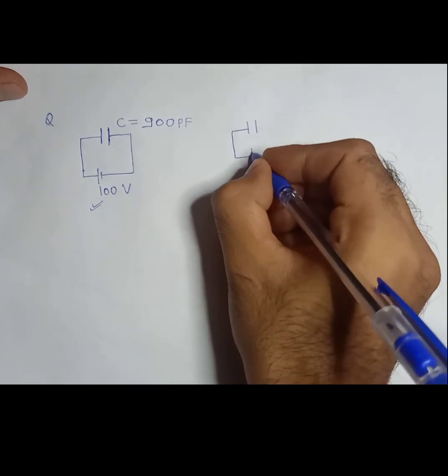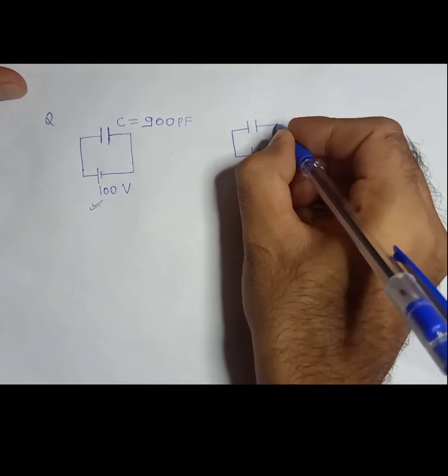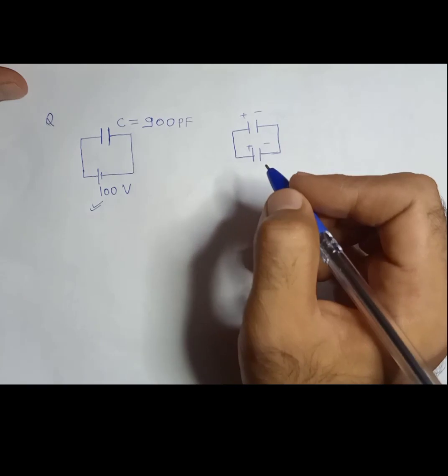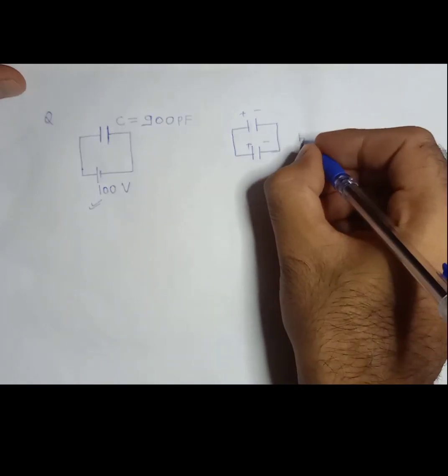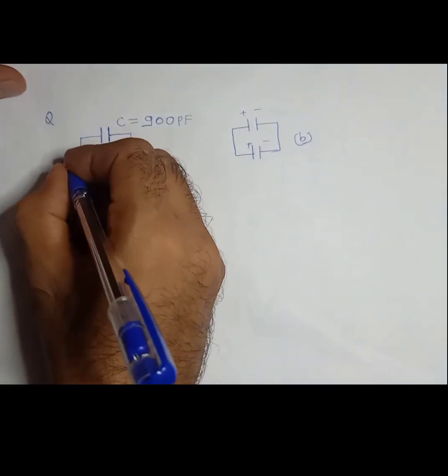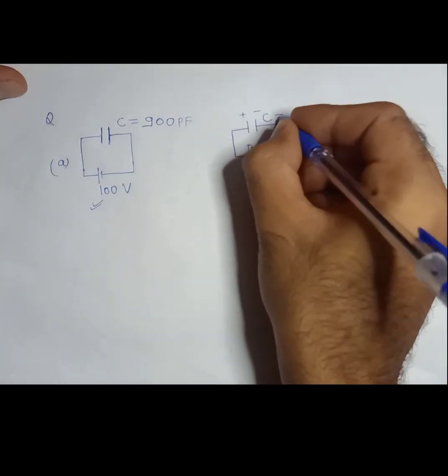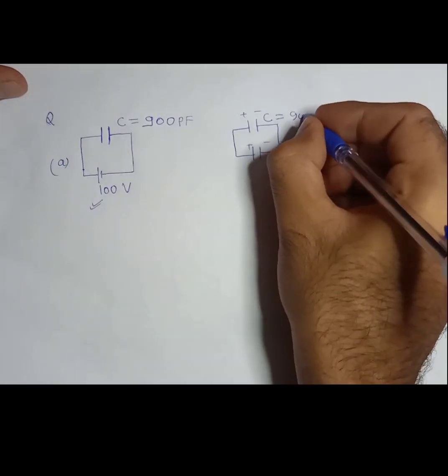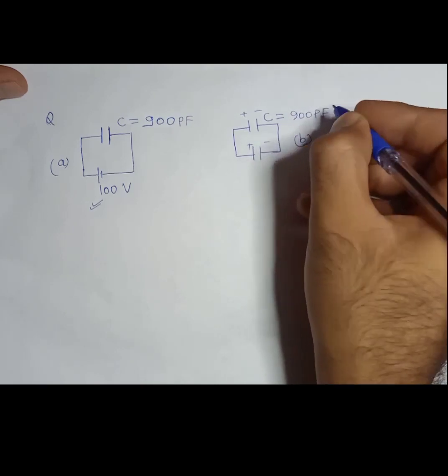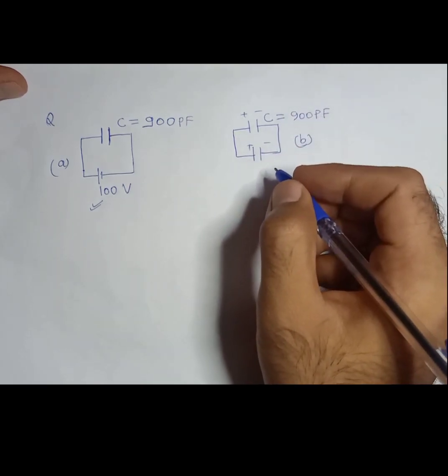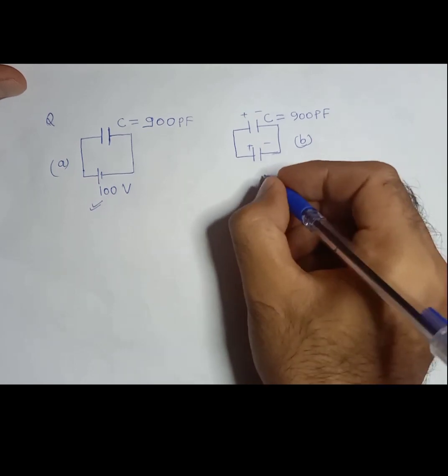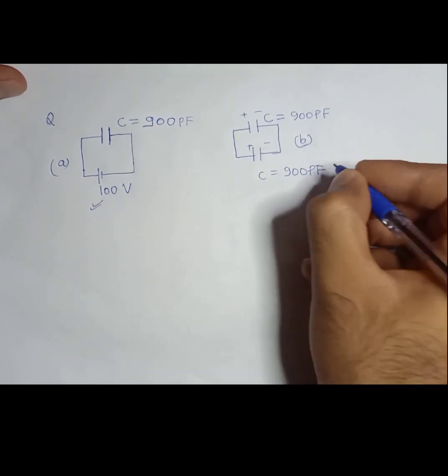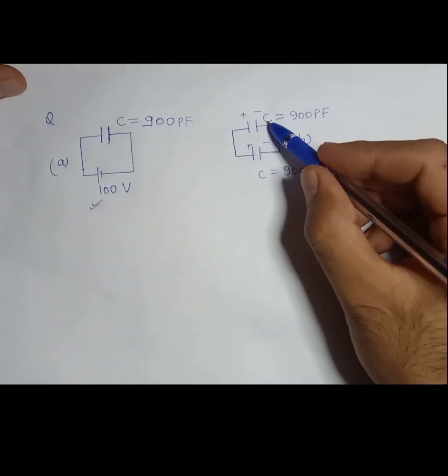Okay, so this is how the system is shown here. This is A and these two capacitances are the same, that is 900 picofarad as well as this is also 900.